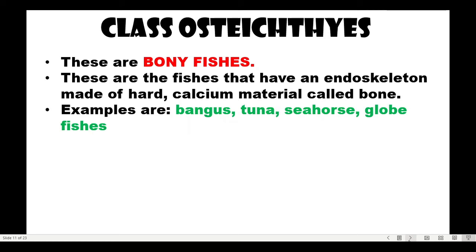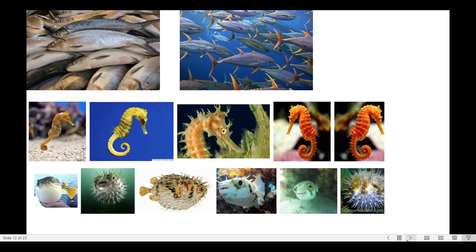Class Osteichthyes — these are bony fishes. 'Osteo' means bone. These are the fishes that have an endoskeleton made up of hard, calcium material called bone — a true backbone. Examples are bangus, tuna, seahorse, and globe fish. Seahorses are interesting because the father carries the young.